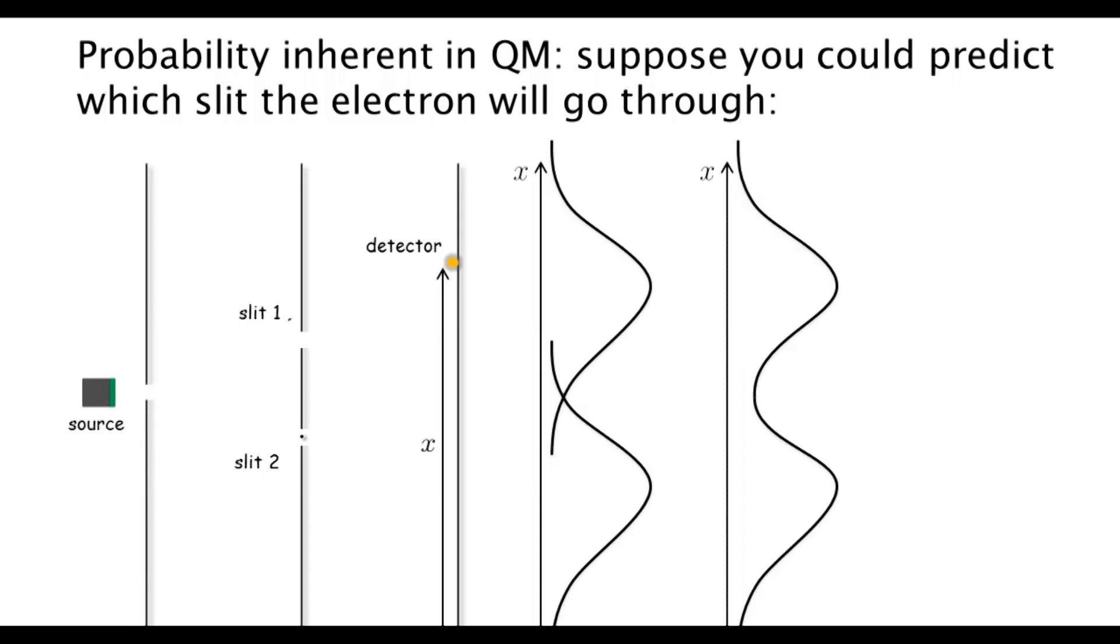Well, actually, if we could, then we could repeat what we were trying to do in the previous experiment with the light to detect which slit the electron went through—except now we don't need the light at all, because the initial conditions tell us which slit it went through. So if we could predict which slit the electron went through...